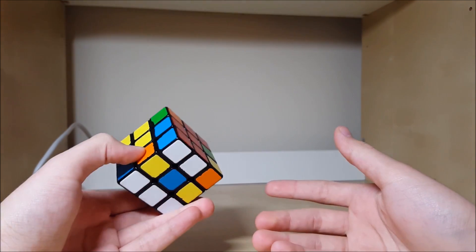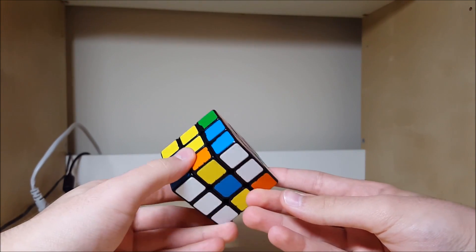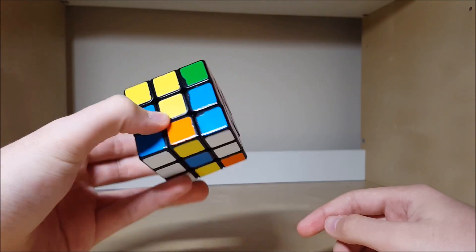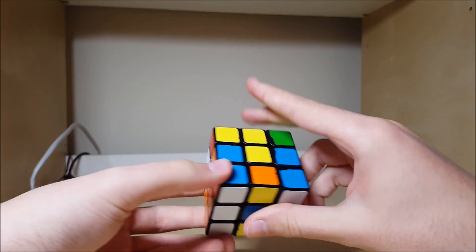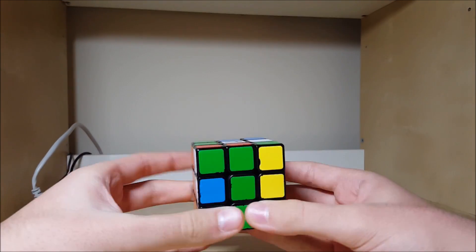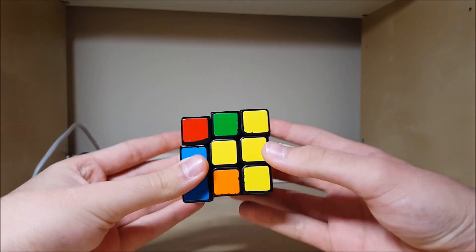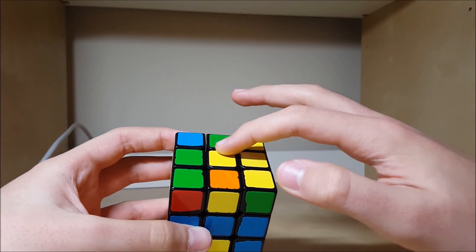Okay, so to finish off this video, I thought I'd just do an example of me doing last slot, so the last pair of the second block, and then solving CMLL. So right here, I have the first block solved, and the square solved, and I have this pair. So I'd insert it with R'U, and then I'd do R wide to get yellow on top.